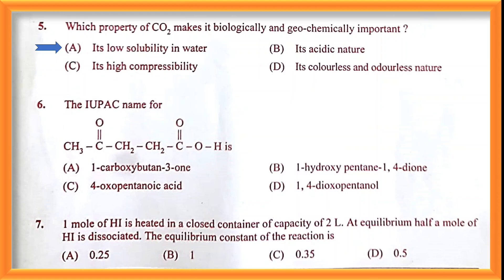Question number six: the IUPAC name of the compound. Looking at the structure, there is a carboxylic acid group and a ketonic group. The carboxylic group acts as the main functional group, and the ketonic group is treated as a substituent. Starting the numbering from the carboxylic carbon and ending with the CH₃ group, you get 4-oxopentanoic acid. Option C is the correct answer.